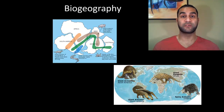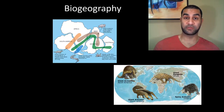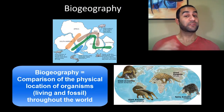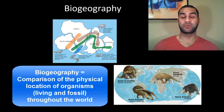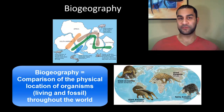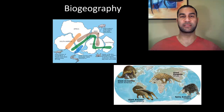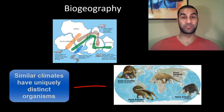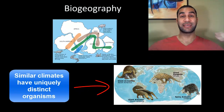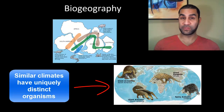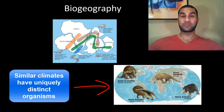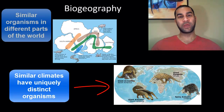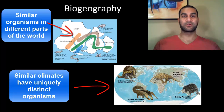Biogeography is basically just a comparison of the physical location of both living and fossil records of organisms throughout the world. Biogeography is something that Charles Darwin really focused on when he was on his trip as a naturalist for the HMS Beagle. A lot of his observations focused on the idea that two completely different regions of the world with very similar climates — because they were found on the same latitudes of the Earth — very similar climate conditions, temperature, amounts of rainfall, had significantly unique organisms. That's one component of biogeography: regions with the same climate in different parts of the world had very different organisms.